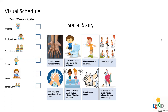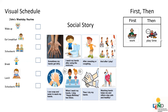Another type of visual support is a first-then chart. First-then charts are used to provide some reinforcement for completing non-preferred tasks. They are used by having a child complete the non-preferred task first, and then gaining access to a more preferred activity. For example, if you complete this worksheet, then you can have five minutes of tablet time.